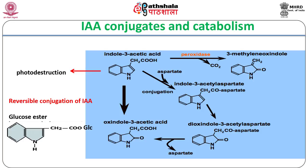Catabolism of IAA is known to occur through peroxidase-catalyzed reactions that lead to oxidation of the indole ring to form oxindoles. Besides this pathway, photodestruction of IAA is also known to occur and is mediated by the plant pigments riboflavins.